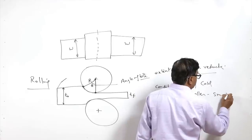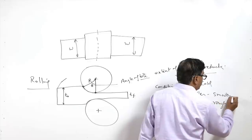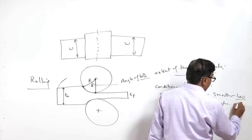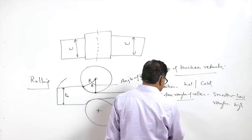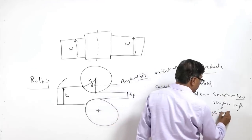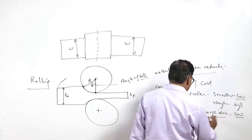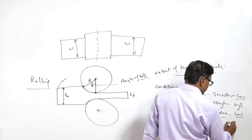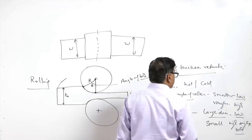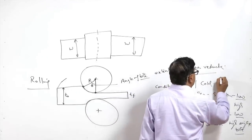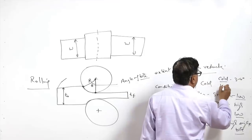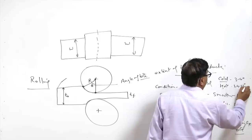For a smooth surface, a low angle of bite is used, while for a rough surface a high angle of bite is used. Large diameter rollers are used for a low angle of bite, while small diameter rollers result in a high angle of bite. For cold rolling the angle of bite is very low — about 3 to 4 degrees — but for hot rolling it can be as high as 24 to 32 degrees.